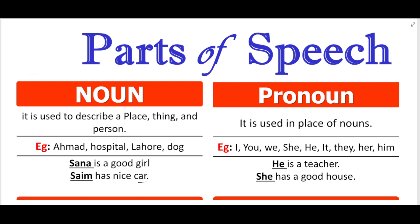Now moving on to pronoun. A pronoun is used in place of a noun. For example, if you are writing a paragraph or essay about Joe Biden, you don't need to repeat his name again and again. Joe Biden is the 47th president of the USA; Joe Biden is doing a great job in politics — you don't need to keep repeating the name.